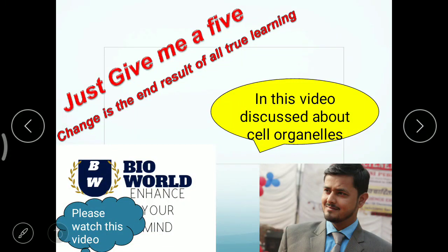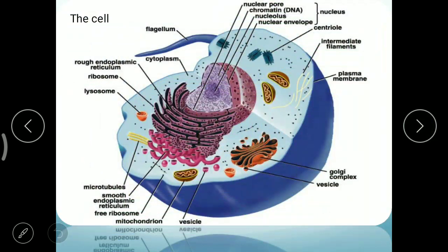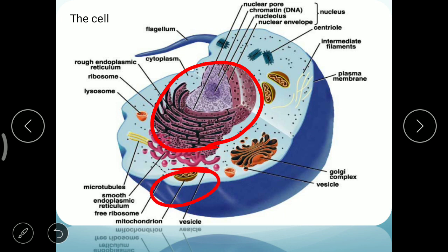Hello students, welcome to my YouTube channel Bioworld. Today's video is on cell organelles. In the last video we discussed cell introduction. Cell was discovered by Robert Hooke in the wooden bark in 1665. The most important organelles are nucleus, mitochondria, Golgi complex, and centrioles. Today we discuss about cell organelles.